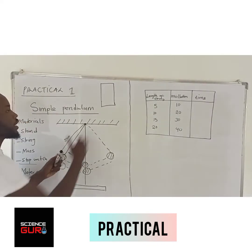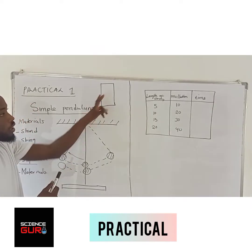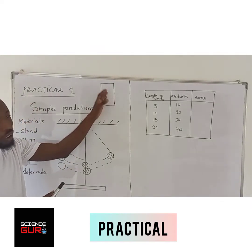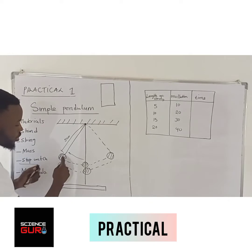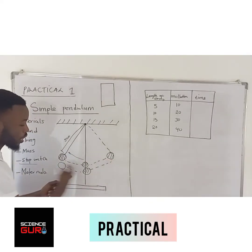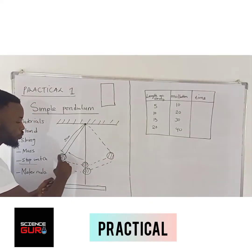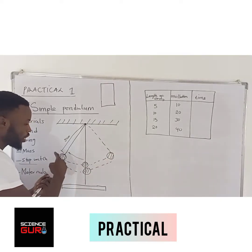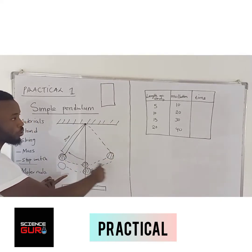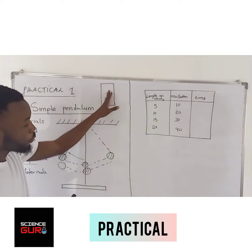Once you release the bob, start the stopwatch. It goes, comes back — 1. It goes, comes back — 2. It goes, comes back — 3. It goes, comes back — 4. It goes, comes back — 5. You stop the stopwatch. You let the bob continue swinging — that's fine. Your interest is the stopwatch.